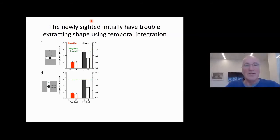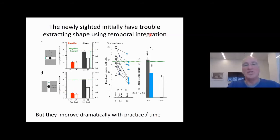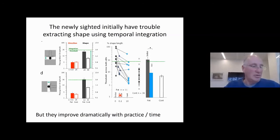Getting back to shape temporal integration: when we look at this, we find somewhat surprisingly that they improve with time. Here's the data of the patients when tested a year later — with further exposure, these patients, all except one, reach below the critical threshold, suggesting they all use temporal integration. I must say I was quite surprised that they can actually learn to acquire such a sophisticated cognitive visual cognition routine.